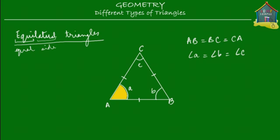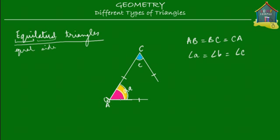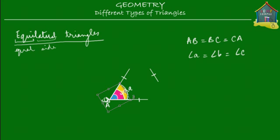I'm going to show you that angle A is equal to angle B, and it's equal to angle C. Let's first show that angle B and A are equal: we cut this, paste this, rotate this, and let's see if it blends — and it does. It blends completely, perfectly with angle A. The pink one blends completely with the yellow one. Angle A is equal to angle B. Now, how about angle C? We take this, cut it, paste it, rotate it — the blue angle blends completely with the pink one, and that blends completely with the yellow one. So angle A is equal to angle B, and angle B is equal to angle C.